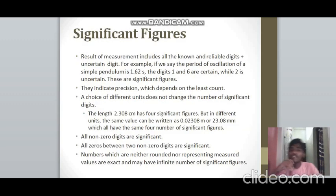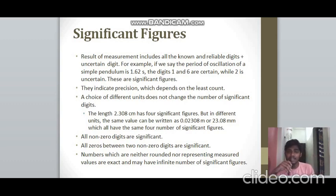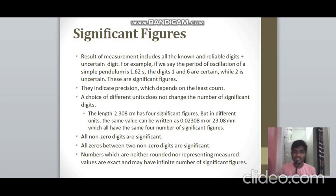Significant figures: whenever we take a measurement, the result contains certain reliable digits plus one uncertain digit. For example, if the period of oscillation is 1.62 s, the digits 1 and 6 are reliable but 2 is uncertain. All these digits together are the significant figures. They indicate precision, which depends on the least count. Changing units does not change the number of significant figures — for example, 2.308 cm has 4 significant figures whether expressed in cm, m, or mm.